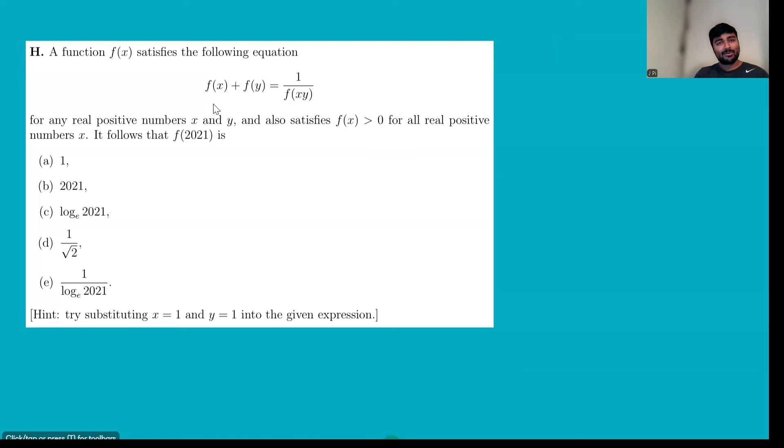A function f(x) satisfies the following equation: f(x) plus f(y) is 1 over f(xy) for all positive x and y, and we're told that f(x) is always positive. We want to know what is the value of f(2021), and we've been given five options here.